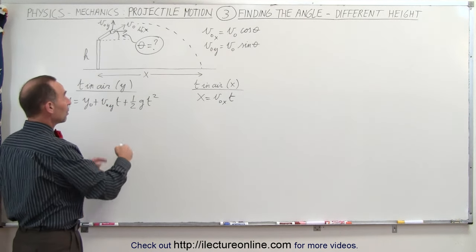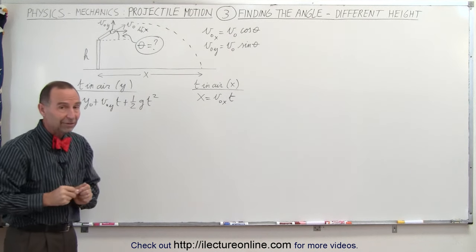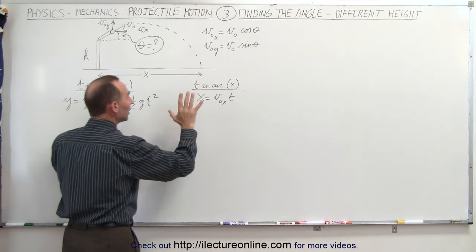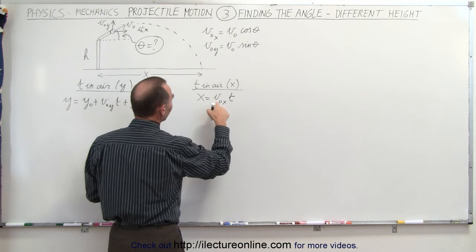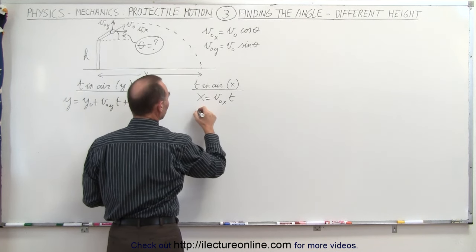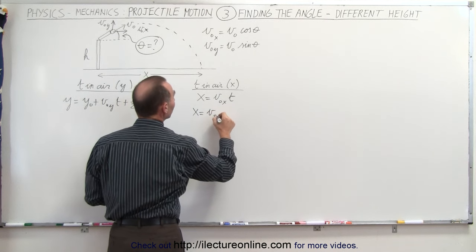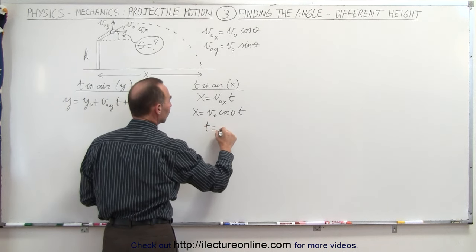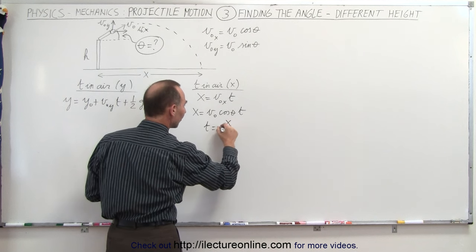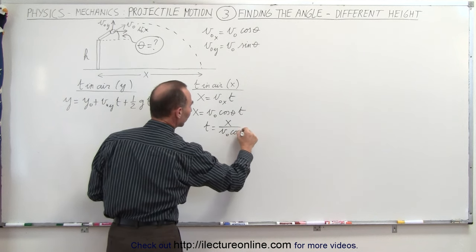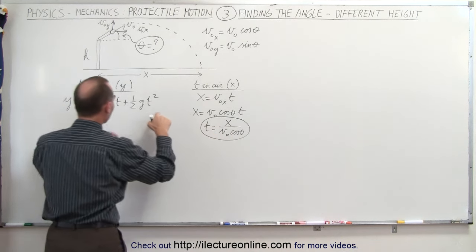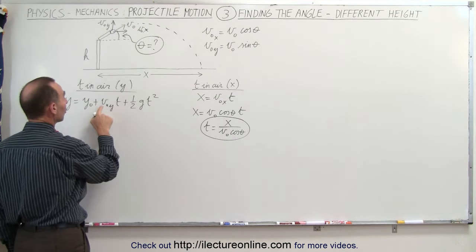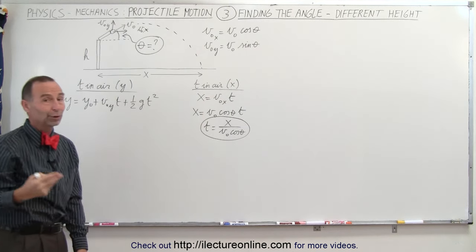The way we solve these types of problems is to eliminate the variable t — we are not given the time. If we solve the x-equation for t and plug that into t and t² in the y-equation, we can eliminate that variable. The initial velocity in the x direction in terms of angle gives us x = v_initial·cos(θ)·t, and therefore t = x / (v_initial·cos(θ)). We're going to take this expression and substitute it into t and t².